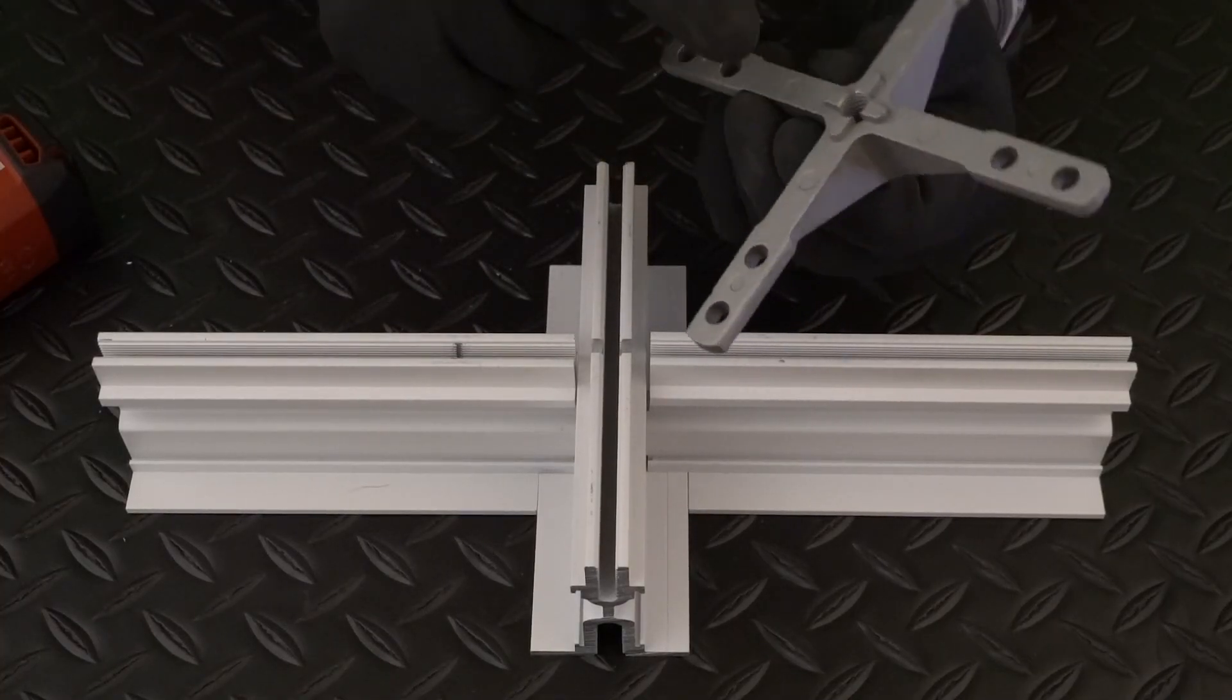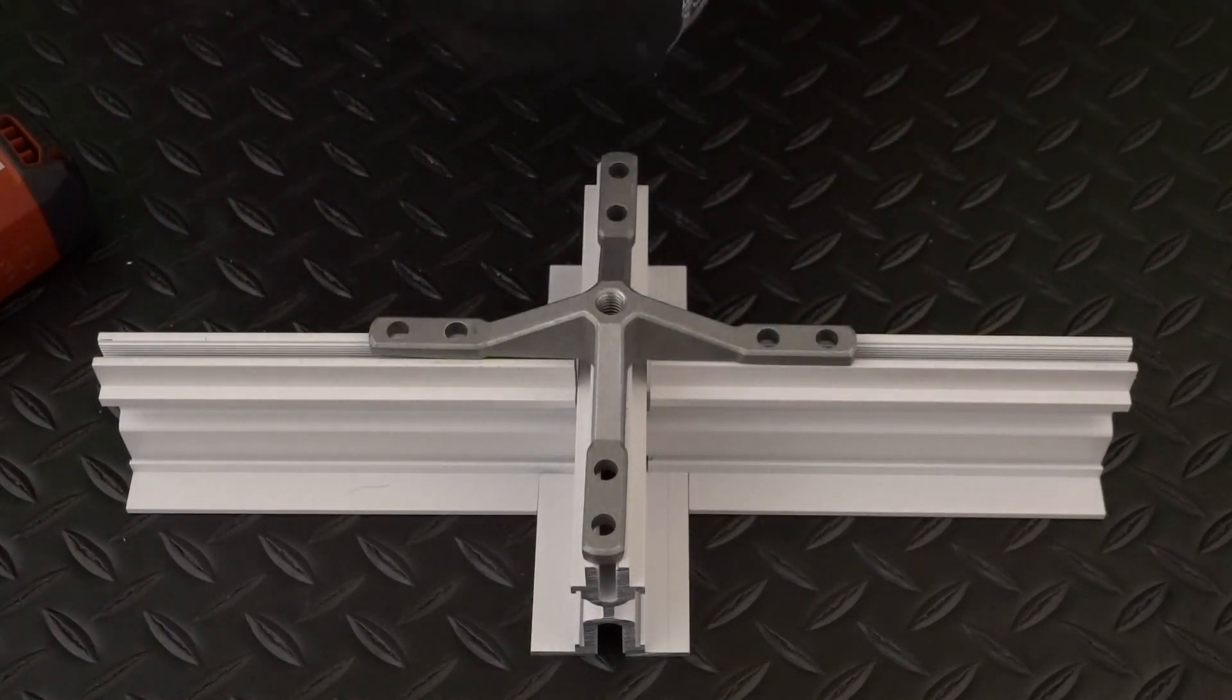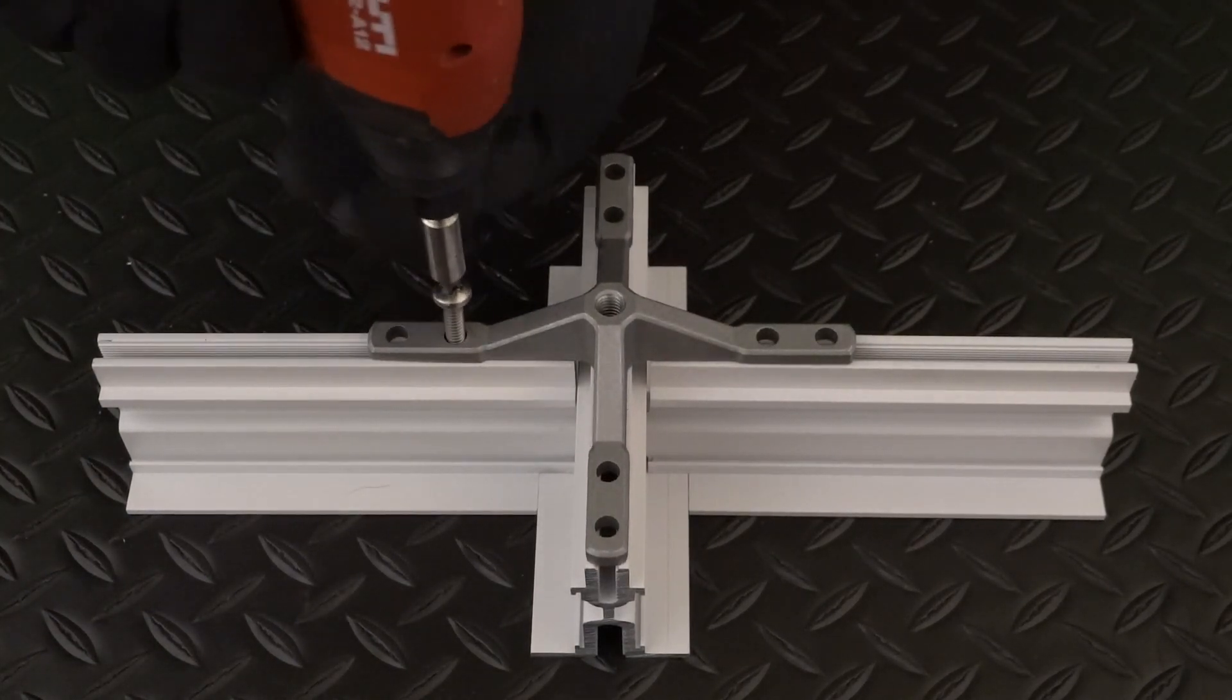When connecting tees to mains, DynaMax brackets have nubs that drop into the mains notches for easier squaring at the intersections and screw attachment.